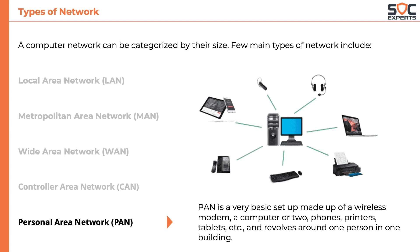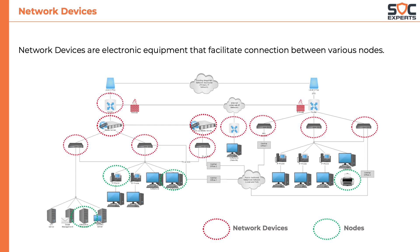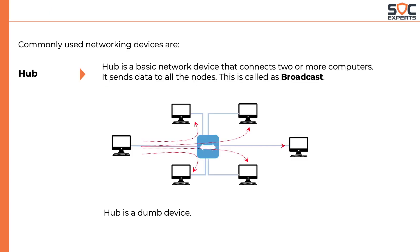In order to enable this kind of connectivity, we need various types of network devices. Network devices are electronic equipment that facilitate connection between various nodes. In this diagram, the devices in the red circle are network devices, and the green ones are the nodes.